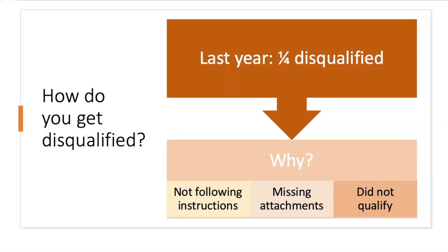We will start with disqualifications. Last year we had one-fourth of the applicants who applied get disqualified. The main reason why students were disqualified was for not following instructions and late or missing attachments. Make sure you ask your letter writers with enough time and remind them to send your letters on time, and the same goes for your transcripts when you're requesting them from your school. Even if it's not your fault that we received these materials late, at the end of the day it is still your application and it's your responsibility to make sure that everything is turned in on time.